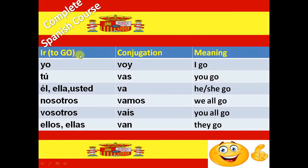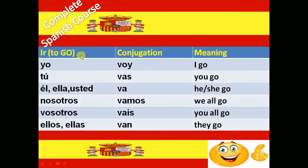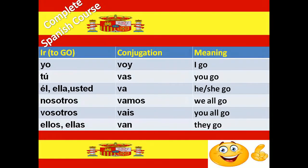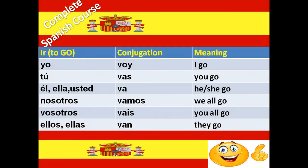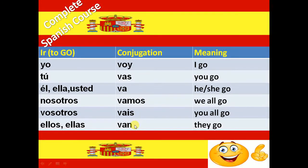Next irregular verb is Ir. Ir means to go. And the conjugation of Ir verb is Voy, Vas, Va, Vamos, Vais and Van.